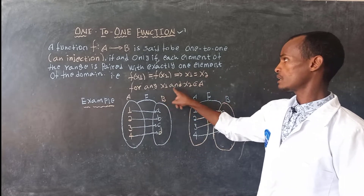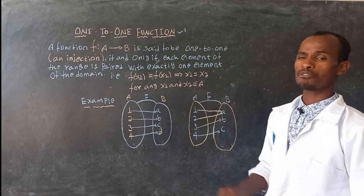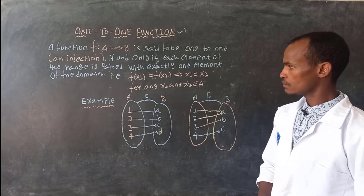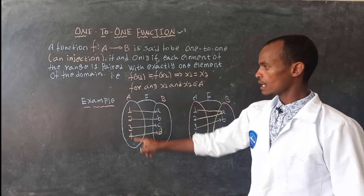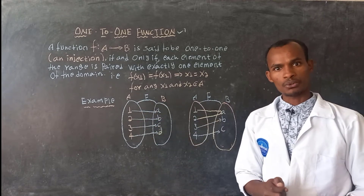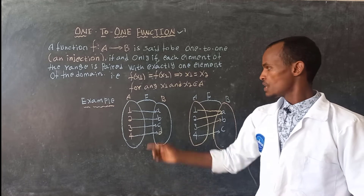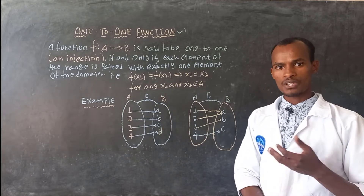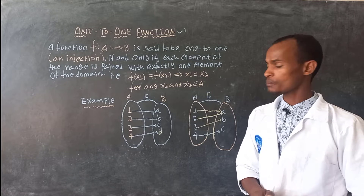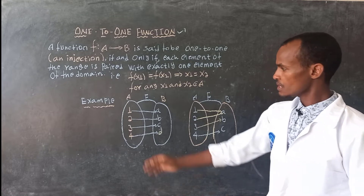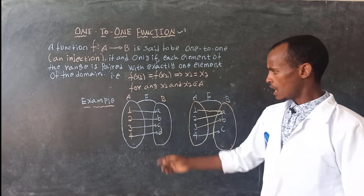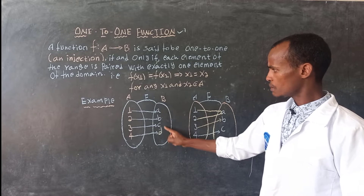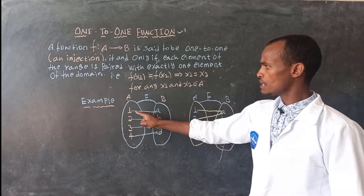For any x1 and x2 that are an element of A. If you have a diagram of a set A, set B, and elements A, B, C, D are elements of A. If you have a function and you have an element of A, then you have an image.